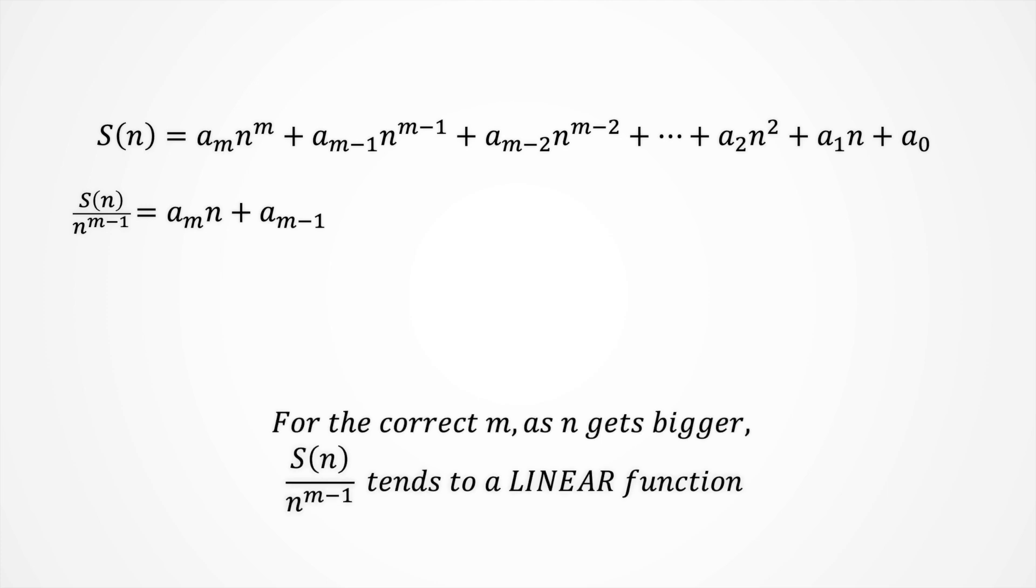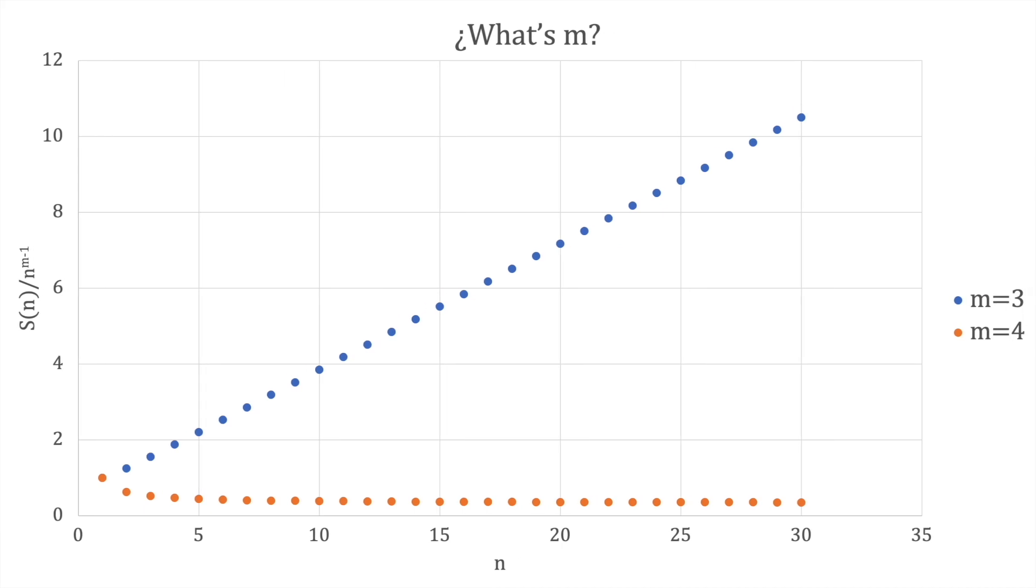Thus, for the correct m, as n gets bigger, s of n divided by n to the m-1 tends to a linear function. Let's plot it for m equals 3 and m equals 4. It is clear from this figure that m equals 3.